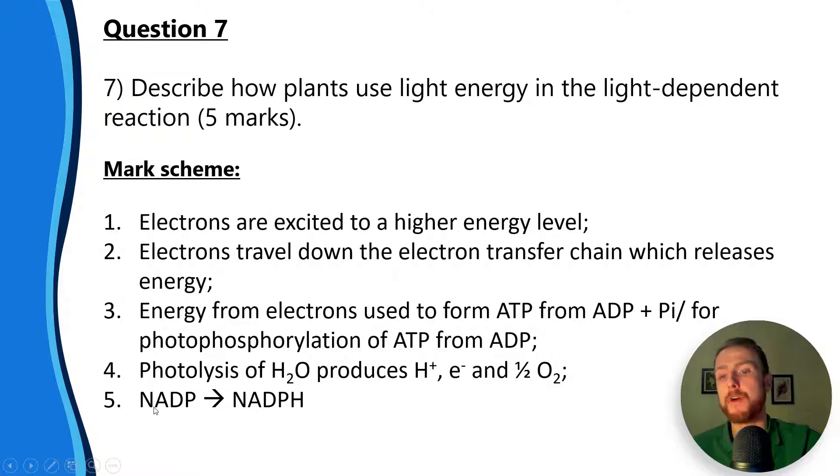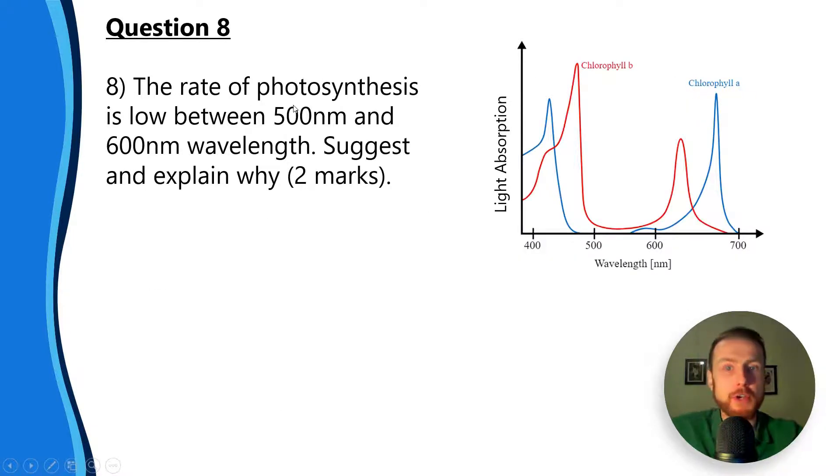Question eight: the rate of photosynthesis is low between 500 and 600 nanometers wavelength. Suggest and explain why. We need to present a possible case and give a reason for that case. We can see here that between 500 and 600 nanometers, the absorption of light by chlorophyll b and chlorophyll a is almost zero. In fact, for chlorophyll a, a lot of it is zero.